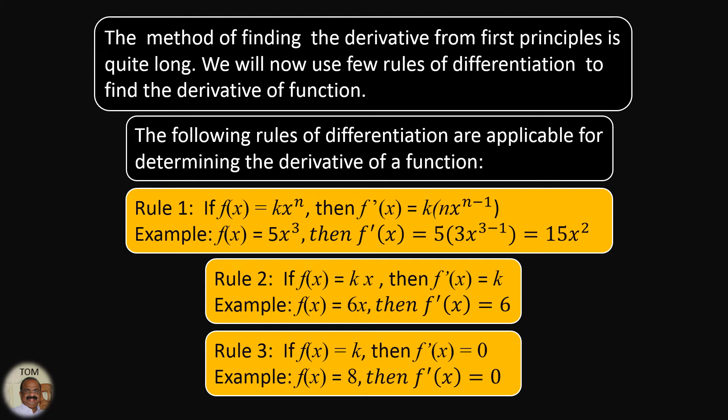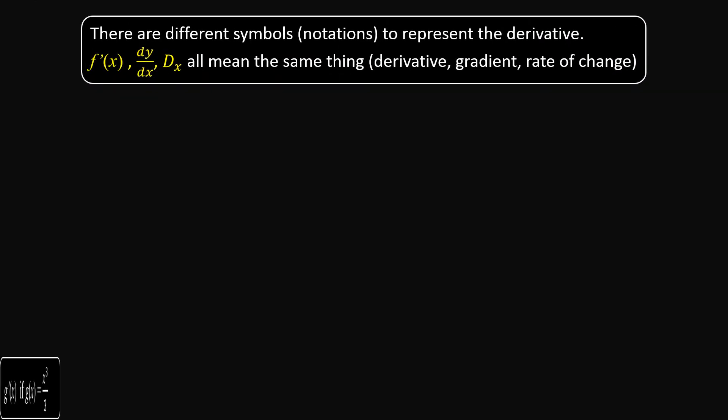Rule number 3: If f(x) = k, just a constant number, then f'(x) = 0. For example, if f(x) = 8, then f'(x) = 0. There are a few notations used to represent derivatives: f'(x), dy/dx, and capital D subscript x — all representing the same thing: derivative, gradient, or rate of change. Different books and question papers use different notations.